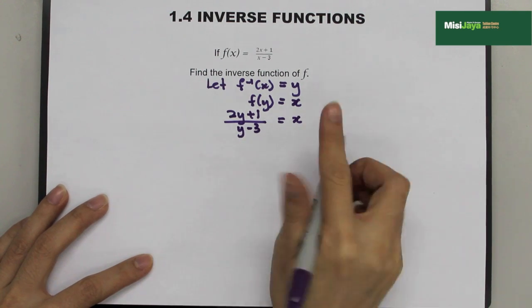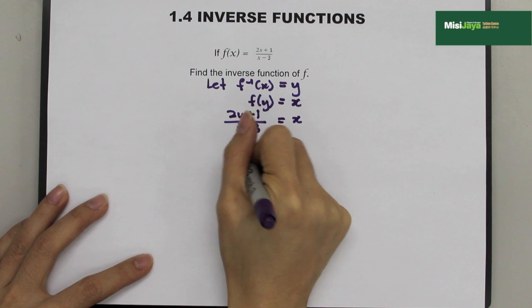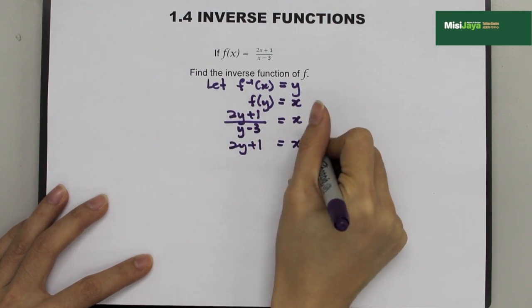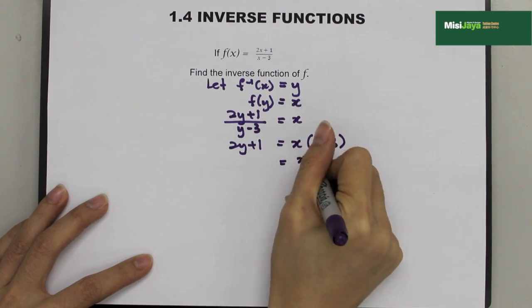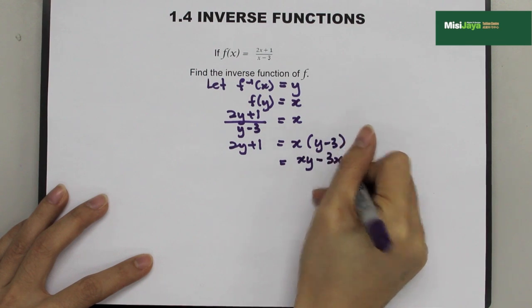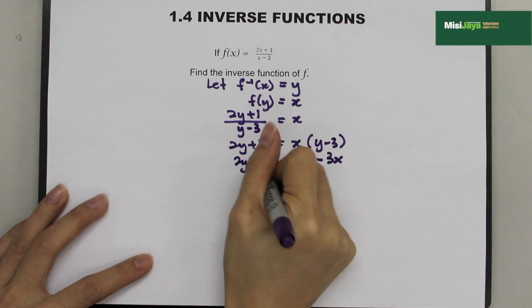Then, we bring the denominator to the right hand side. 2y + 1 becomes x(y - 3). So, we expand the bracket. It becomes xy - 3x. Bring down 2y + 1.